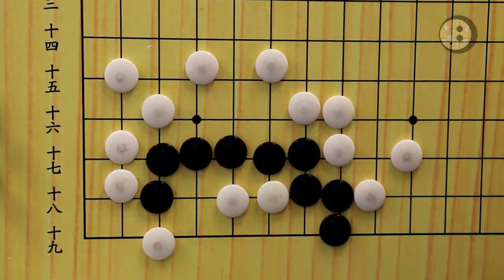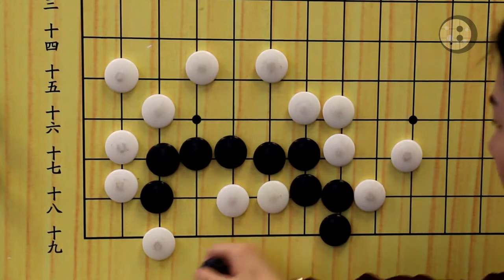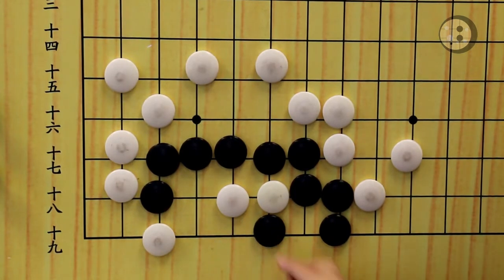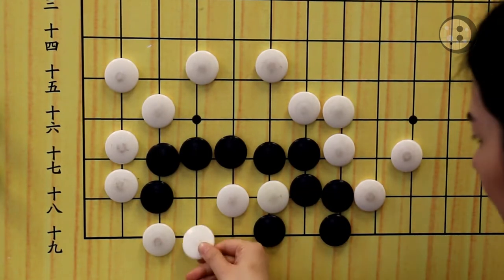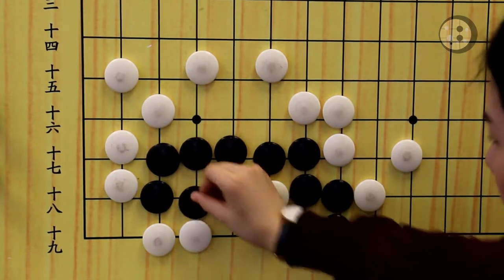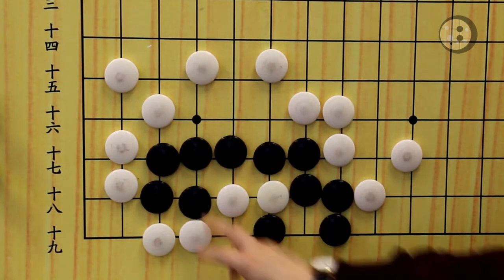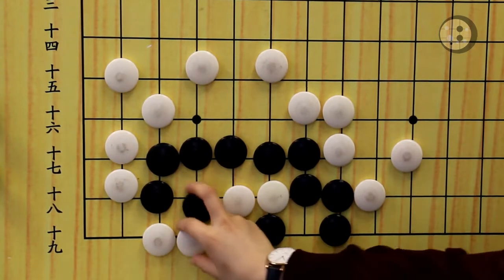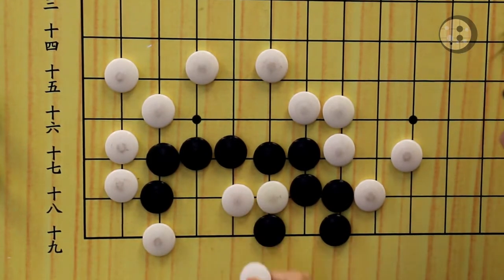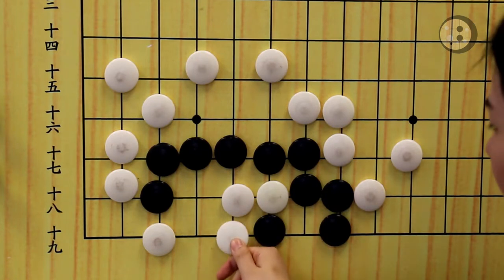If blocking is not correct, where should black play to make a life? The correct answer is hane on the first line. After you hane here, you already make one eye over here. If white tries to connect these two stones, it will be a connecting die shape for white. So it doesn't work. If white connects, then black can capture.